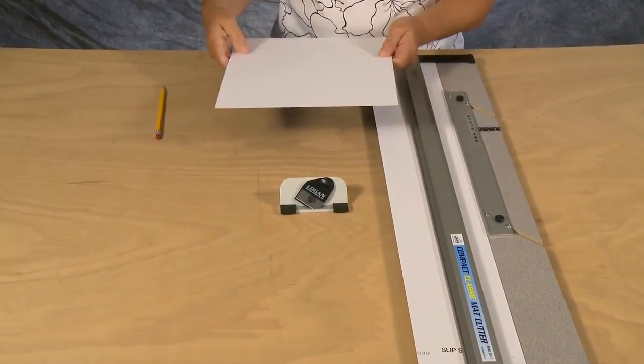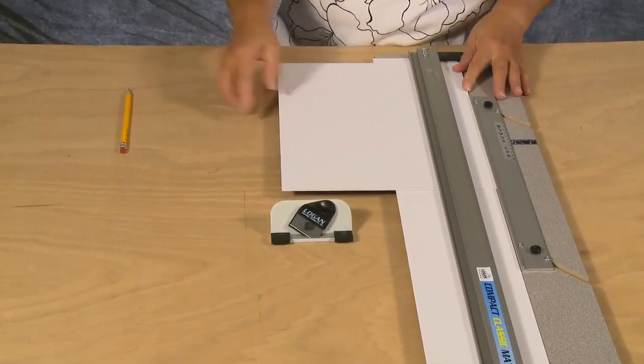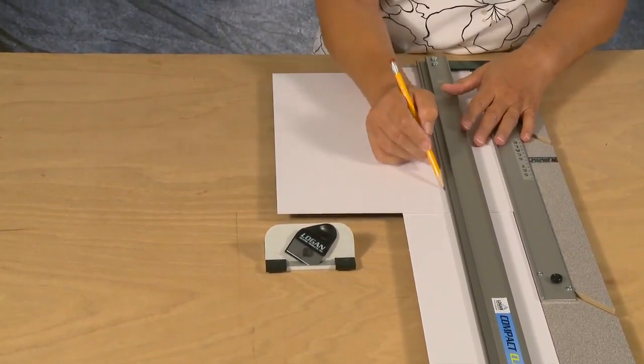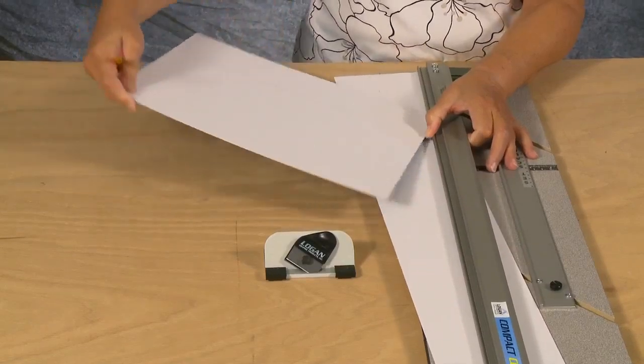Place a mat blank color side down under the guide rail and up against the mat guide. Using a pencil, mark all four borders on the back of the mat blank.